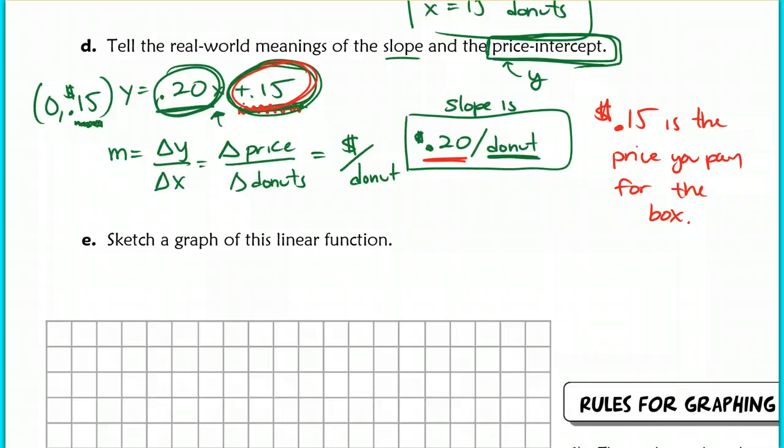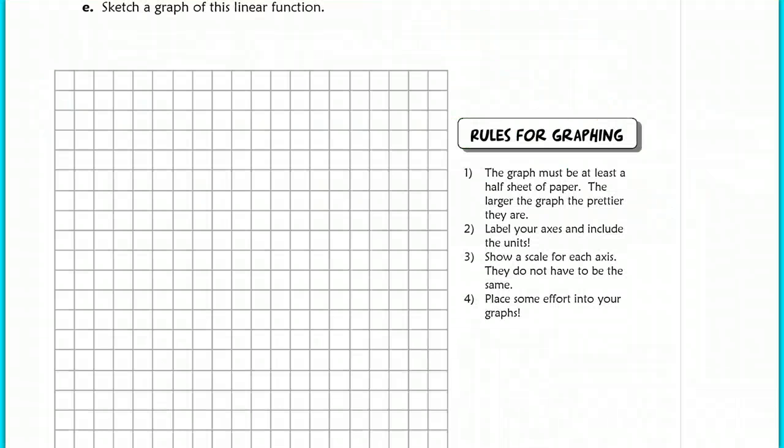So, the slope, just to reiterate, is the change in your price over the change in donuts. So, when we talk about that, that's a money amount per one donut. So, that's price, 20 cents per donut. So, in every increase in donut, you pay an additional 20 cents. Okay, we're going to actually do this part, part E here in class. So, this is the end of this lesson. Please leave this blank because we're going to go over this together in class. Nice job!